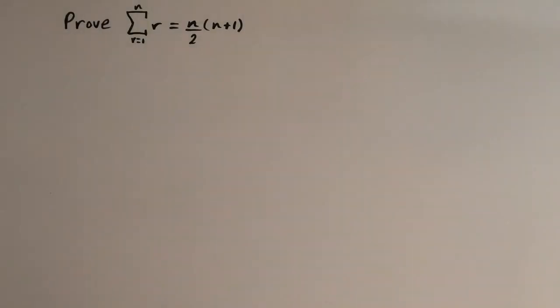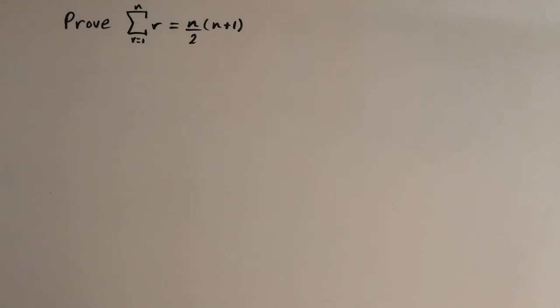In this video I'm going to show you how to prove that the sum of n natural numbers is equal to n over 2 times n plus 1. In one of my previous videos I showed you how to derive this, but in this video we're going to take a different approach and try and prove it.